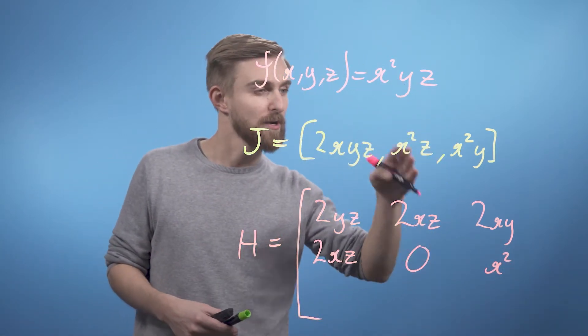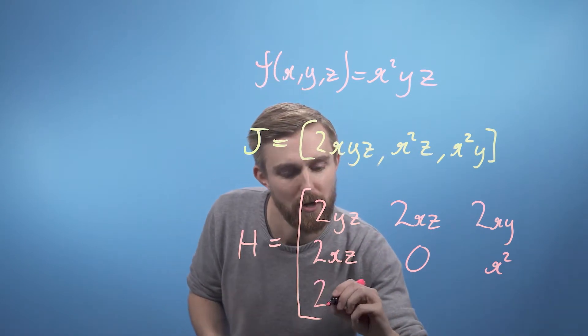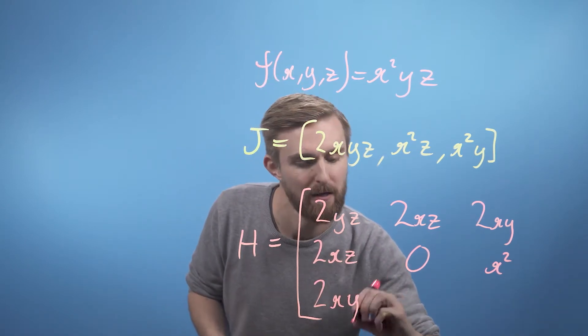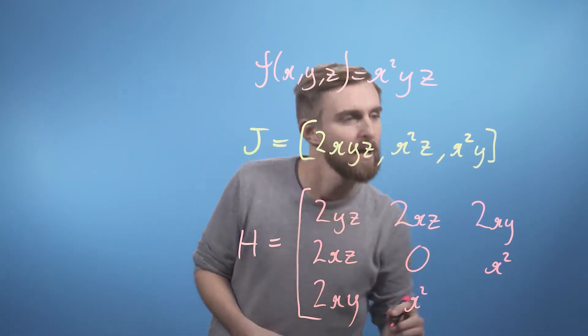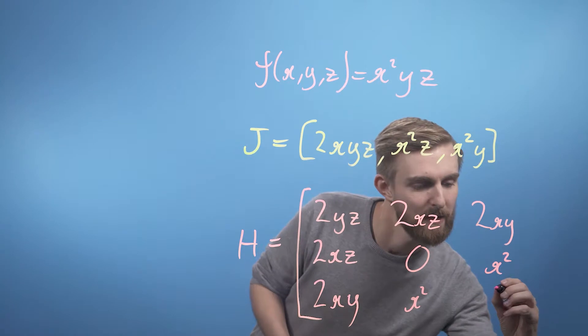Lastly, take this term, make the last row, differentiate with respect to x, we get 2xy. And then with respect to y, we get x squared. And with respect to z, we get nothing.